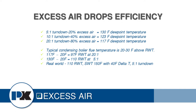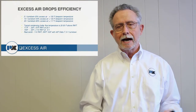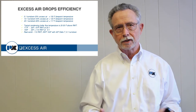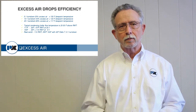In the marketplace you're going to hear a lot of people promoting turndown ratios — five to one, ten to one, fifteen to one, twenty to one, sometimes even twenty-five to one. These sound really great, but a lot of times we don't look at the science behind it to see how it affects the combustion process and the efficiency of the appliance we're firing.